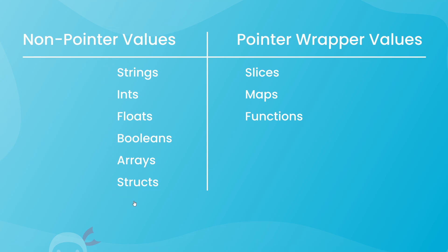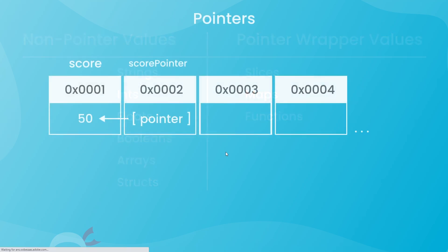Pointers are a data type in themselves, and when we create them they're stored in their own memory block — all they do is point to another memory location. For example, I could create an int with a variable name of score stored in a single memory location, then manually create a pointer variable called score_pointer which points at the memory location of that score value.